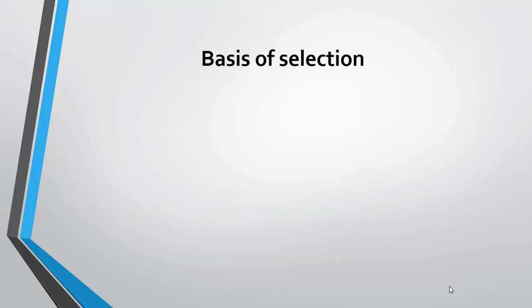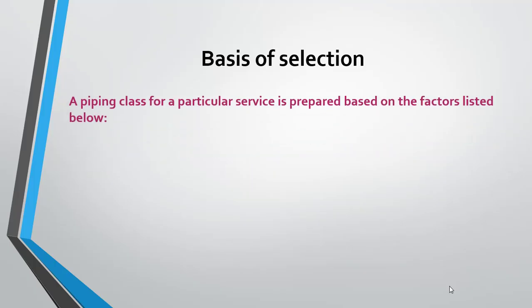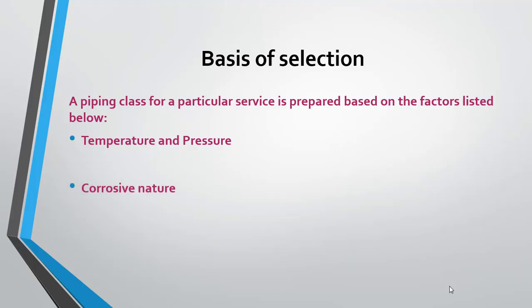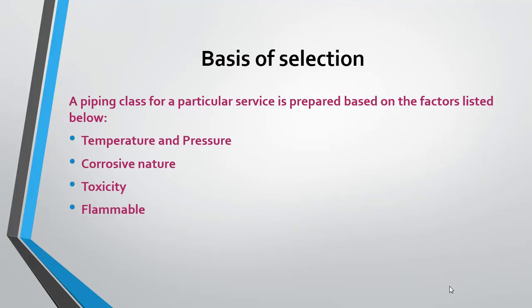Now I'll brief you on the basis of selection of piping material. A piping class has a list of piping materials which are carefully selected based on certain factors. Those factors are: temperature and pressure — whether it's a high or low temperature service, or a high or low pressure service; the corrosive nature of the fluid — whether it's highly corrosive or non-corrosive, highly toxic or non-toxic, highly flammable or non-flammable; the type of joints to be used — welding joints or flanged joints; and what type of corrosion allowance to be considered — 1 mm, 2 mm, or 3 mm. These are the primary factors to be considered for the selection of materials.